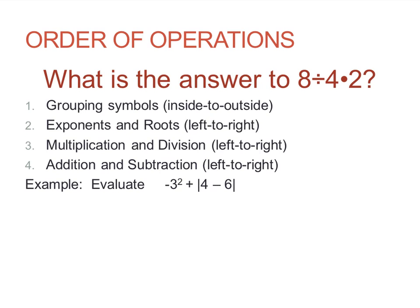First, order of operations. Think about the problem eight divided by four times two. Try to think of what the answer could be. Notice there could be two possible answers theoretically. If you do the multiplication first, you get eight divided by eight, which is one.